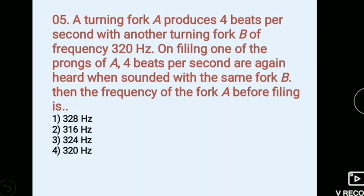A tuning fork A produces 4 beats per second with another tuning fork B of frequency 320 hertz. On filing one of the prongs of A, 4 beats per second are again heard when sounded with the same fork B. Then the frequency of the fork A before filing is. Options: 1) 328 hertz, 2) 316 hertz, 3) 324 hertz, 4) 320 hertz. Answer 2, 316 hertz.